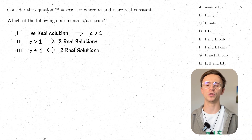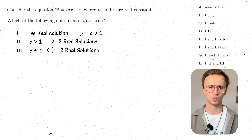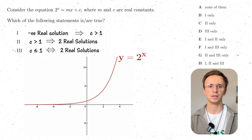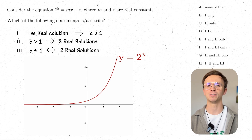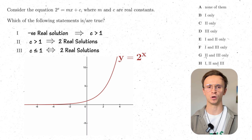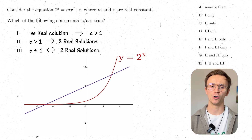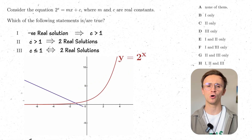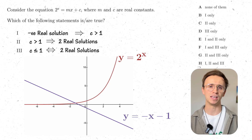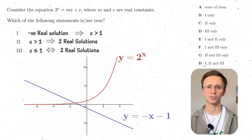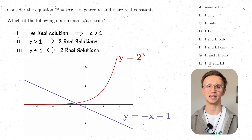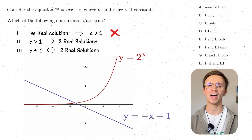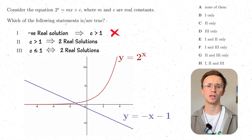Sketching 2^x and mx + c: for statement one, we're assuming a negative real solution and need c > 1. However, drawing a line with negative gradient where m is negative, we can have a negative real solution with c less than one. So statement one is not true — one negative real solution does not require c > 1. Disproved by counterexample.